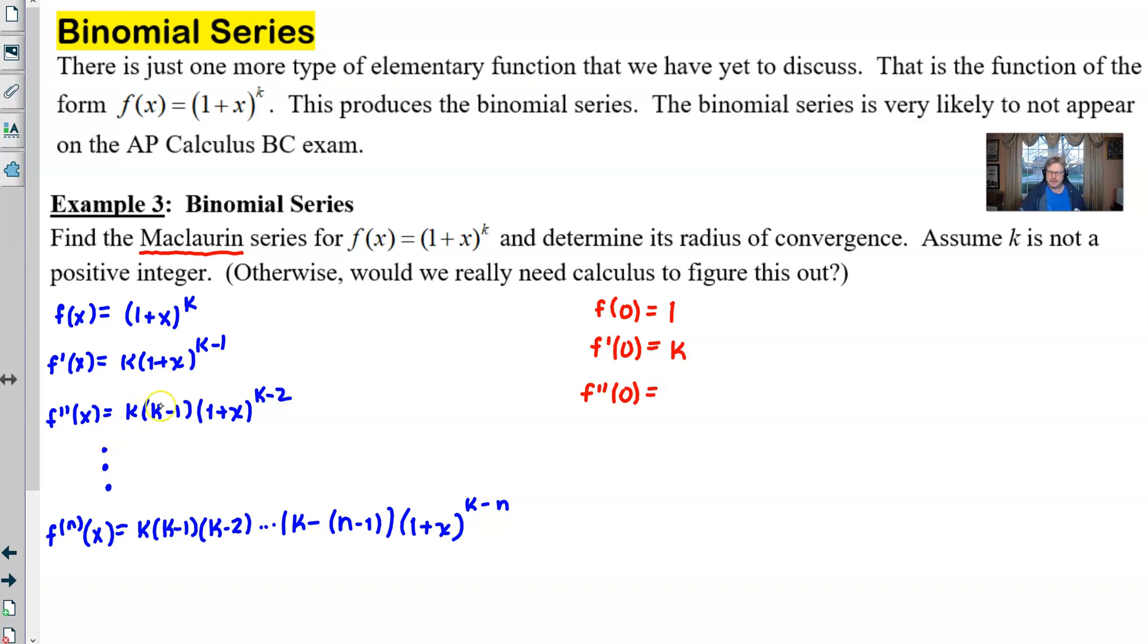Again, times one to some power, which is just going to leave us with a K, quantity K minus one. And if we continue this all the way down to the nth derivative, evaluating at zero, hopefully, we can all see that you would have K times K minus one times K minus two, et cetera, all the way down to K minus (n minus one). In other words, you can probably see that the value that we have here in the last term, K minus one, the one is one less than the derivative that we've taken. Here, N minus one is one less than this derivative that we've taken.